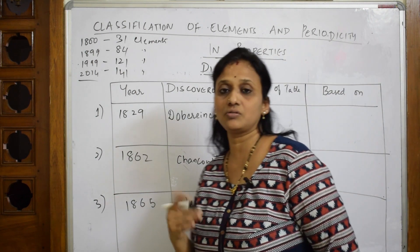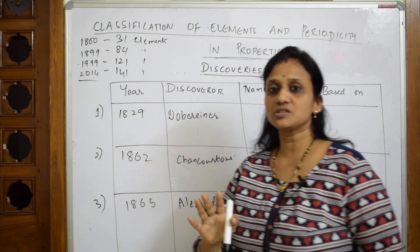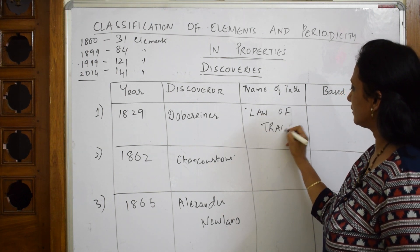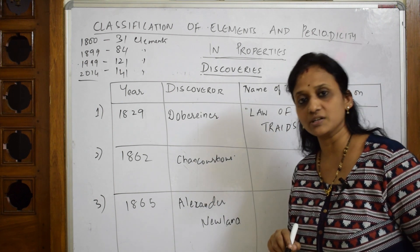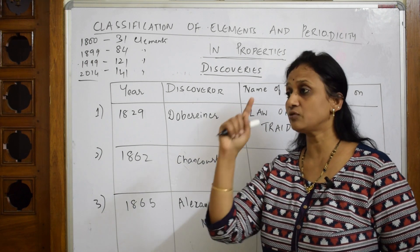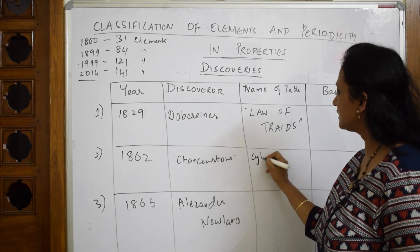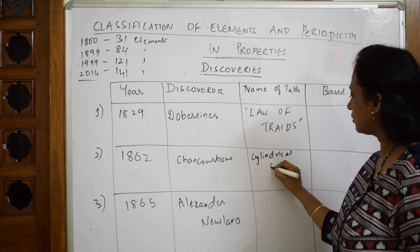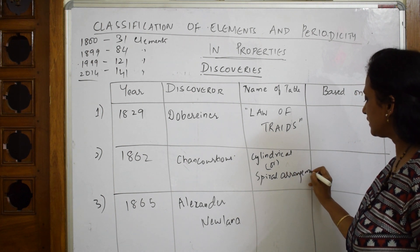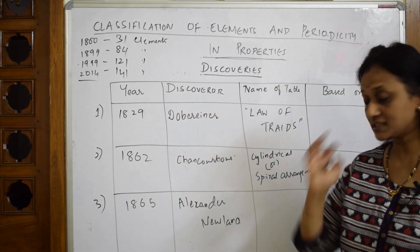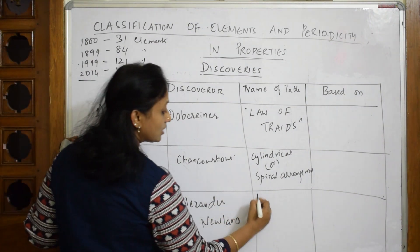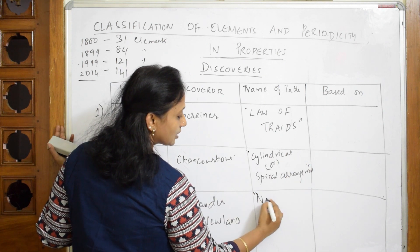Dobereiner's discovery is called the Law of Triads — a set of three elements. De Chancurtois arranged elements in the form of a cylindrical or spiral arrangement, so his contribution is called the cylindrical or spiral arrangement of elements. Then in 1865, Alexander Newlands gave us a table called Newlands Octaves — 'octaves' meaning that the properties of the first and the eighth element will be similar.